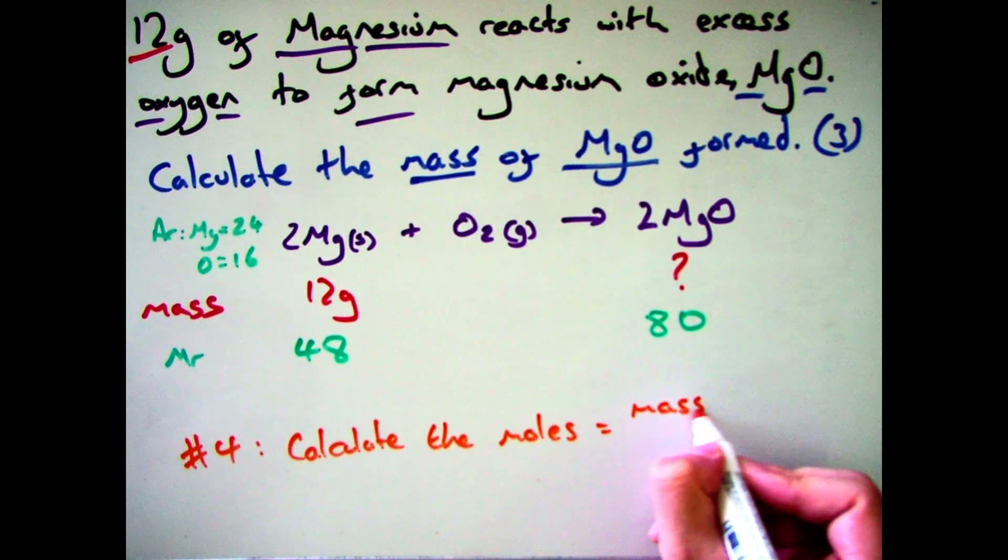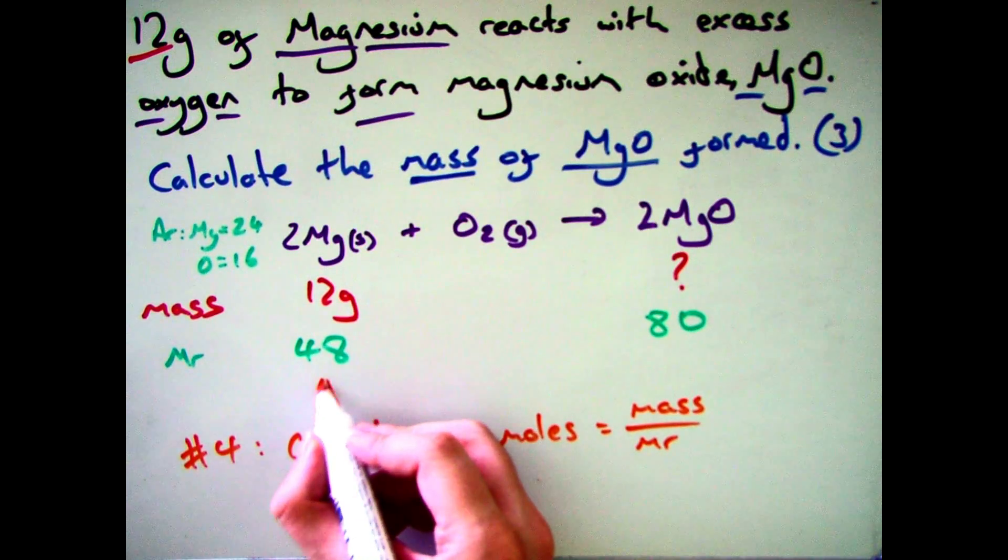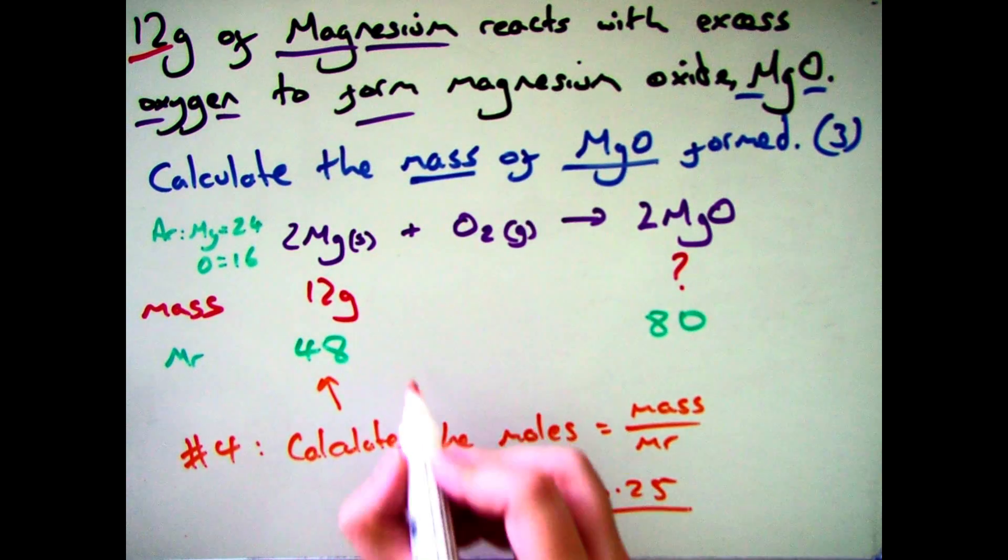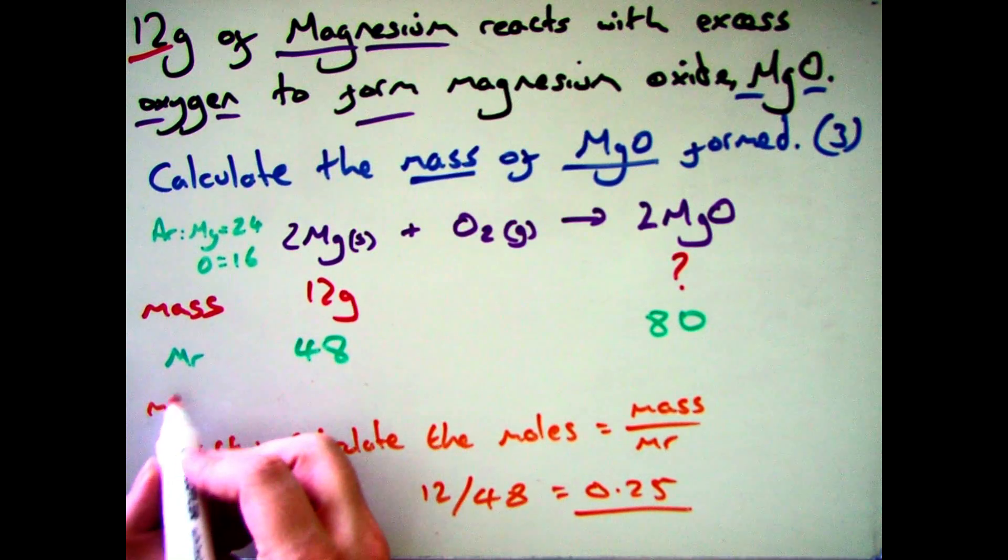So to work out the moles then you need to divide the mass of the compound by the molecular formula. So for magnesium oxide I have 12 grams which I need to divide by 48 which gives me 0.25 moles. Now if you can't remember what moles are there's another video on that which I can direct you to with the link here.